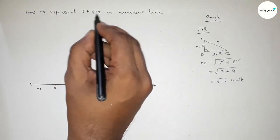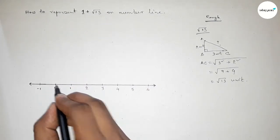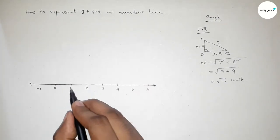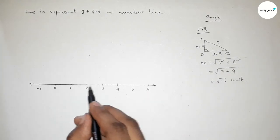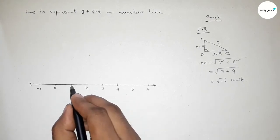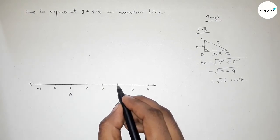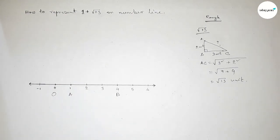Now applying this concept. First measuring one unit on the number line — from this point to this point is one unit. Now taking three unit length from this point to this point, so total three unit length. Taking point A here and point B here, so AB equals three units. Also taking point O, and now we have to draw a 90-degree angle at point B using a compass.